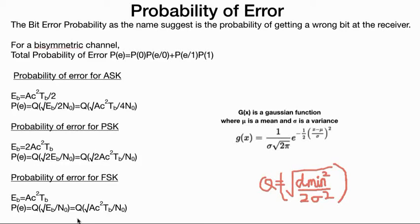If you put all these values in — sigma and N0 for noise — you will get your bit error rate and eventually your probability of error. For FSK, if you get the d²min value, you put the value of Q in the formula. In the question, x value, mu, and sigma will be known to you, and you can calculate the value of probability of error eventually.